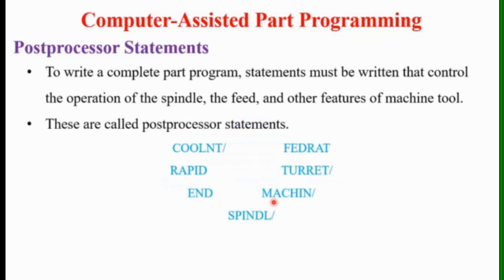To write a complete part program, statements must be written that control the operation of the spindle, the feed rate, and other features of the machine tools. These are called post processor statements. For example: COOLNT (coolant on or off), FEDRAT (feed rate statement), RAPID (rapid movement of the tool from one point to another position), TURRET, END program, and SPINDL SPEED (spindle speed) — all denoted using post processor statements.